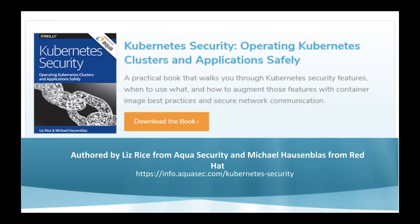I co-authored a book along with Michael Hausenblas — it says here from Red Hat, though I believe as of two days ago he actually moved to AWS — another well-known member of the Kubernetes community. The two of us wrote this book that you can download for free from the Aqua website at aquasec.com. Hopefully you'll find it a useful resource covering many different things you can do to improve the security of your Kubernetes cluster.